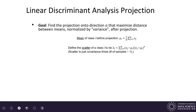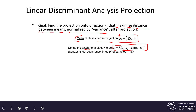We'll give a summary-level walk-through without getting too bogged down in the details. The goal is to find the projection on a that maximizes the distance between the means, normalized by some sort of variance after projection. The mean of class i before projection is the standard mean formula. We define the scatter of class i, which is the same as the covariance matrix formula but without dividing by the number of samples minus one.